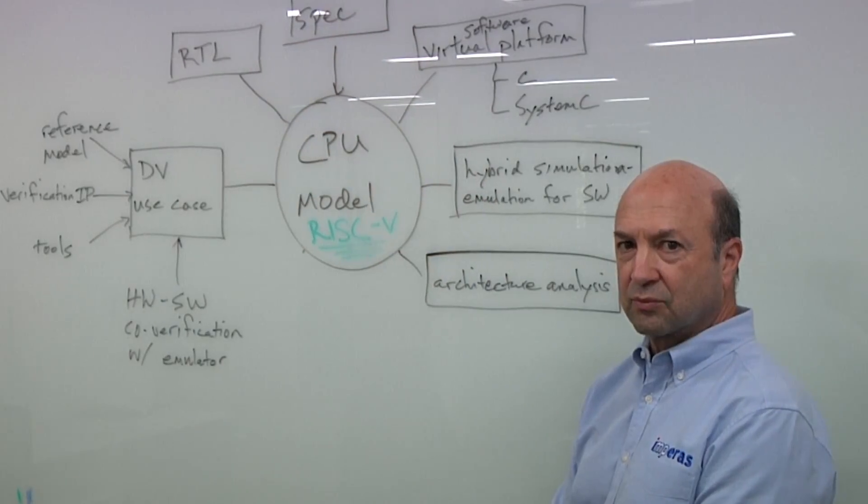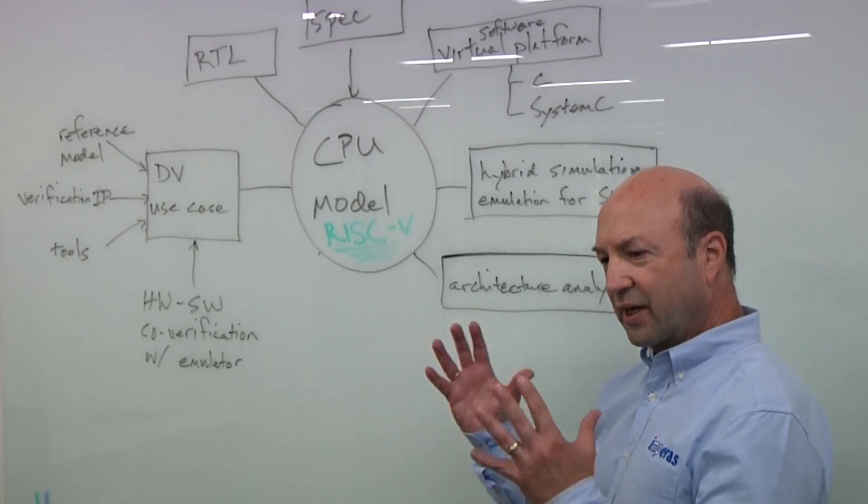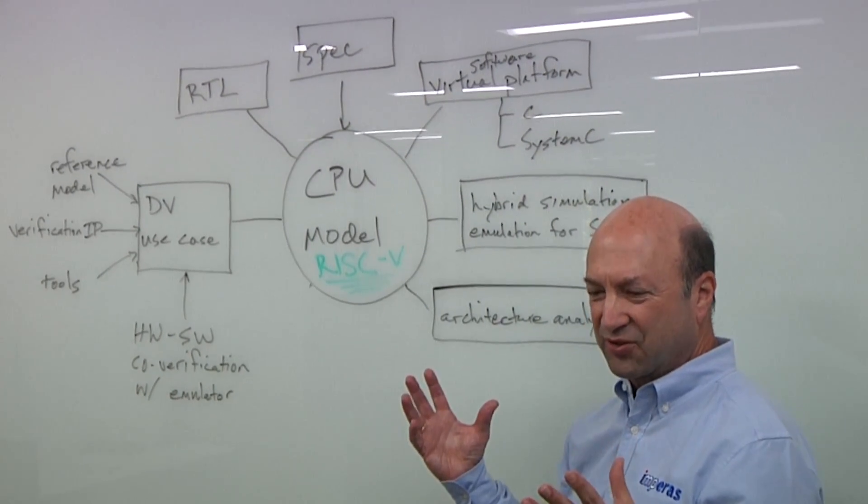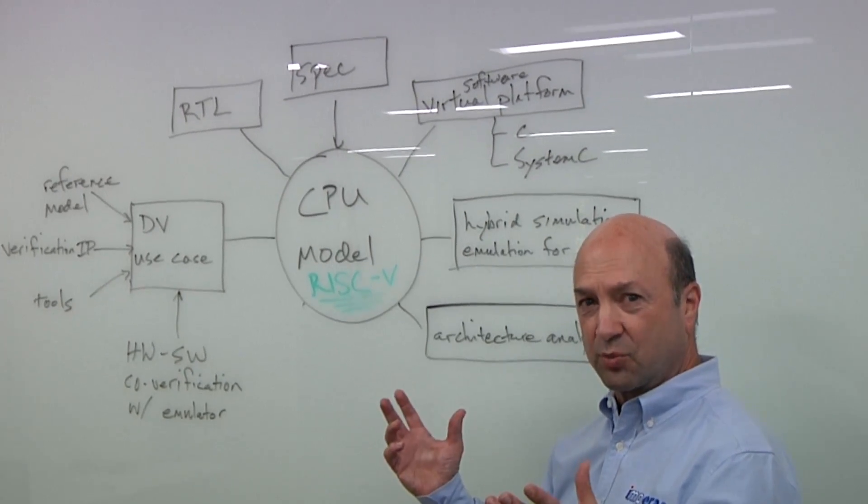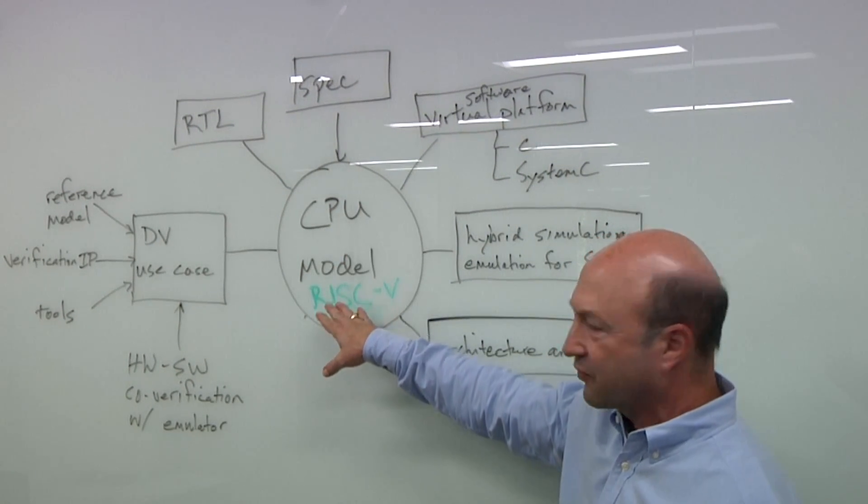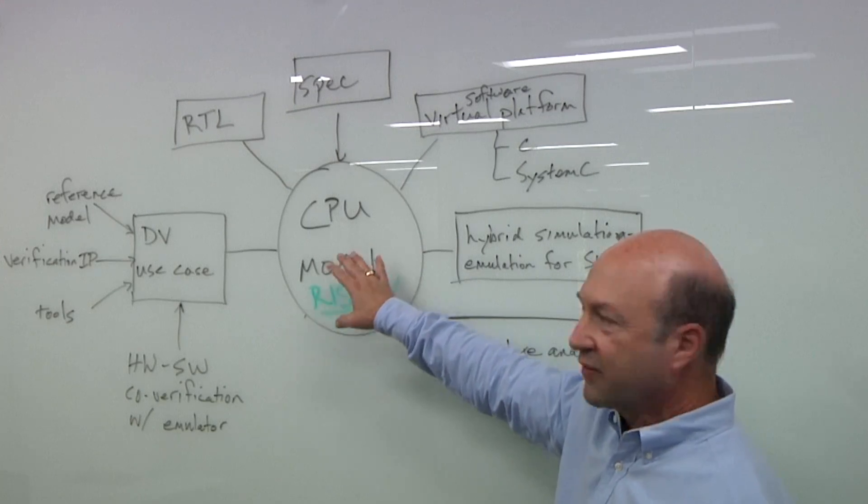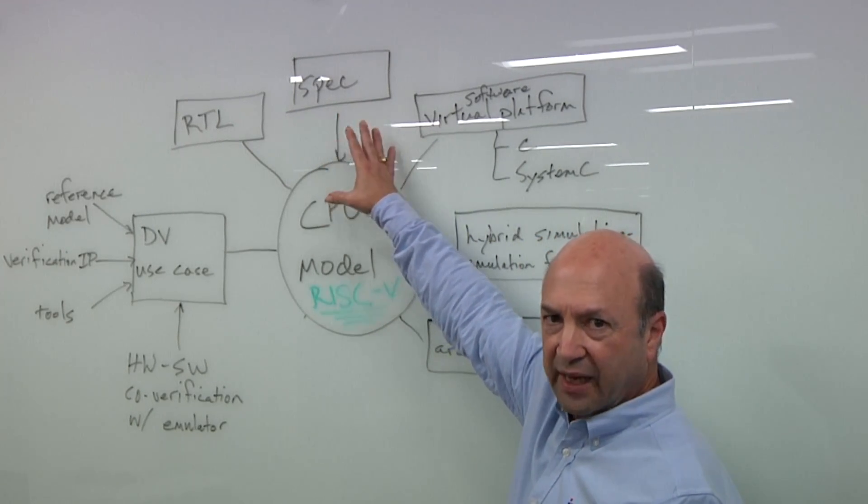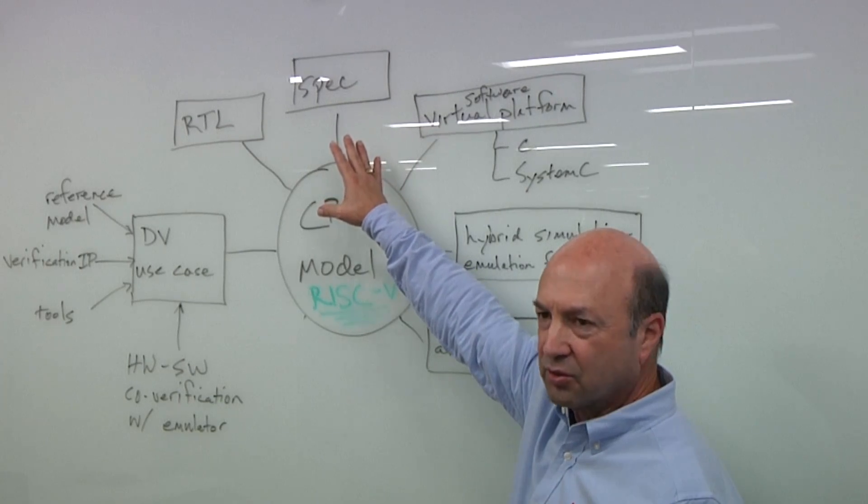Let's take a closer look. We're looking at a diagram of the sort of universe around a RISC-V processor model. The center of the universe is the CPU model, the RISC-V processor model. And this is going to be derived from the RISC-V specification, any customization you're going to be adding to that.